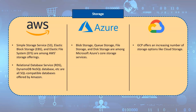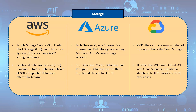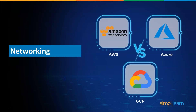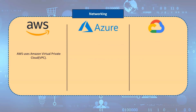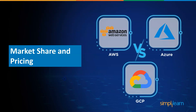For databases, Amazon offers RDS, DynamoDB NoSQL database, ElastiCache in-memory data store, Redshift data warehouse, Neptune graph database, and database migration service. Azure's database choices include SQL Database, MySQL Database, and PostgreSQL Database. GCP offers the SQL-based Cloud SQL and Cloud Spanner, a relational database built for mission-critical workloads. For networking, AWS uses Amazon Virtual Private Cloud (VPC), Azure uses Azure Virtual Network (VNet), and GCP uses Cloud Virtual Network.